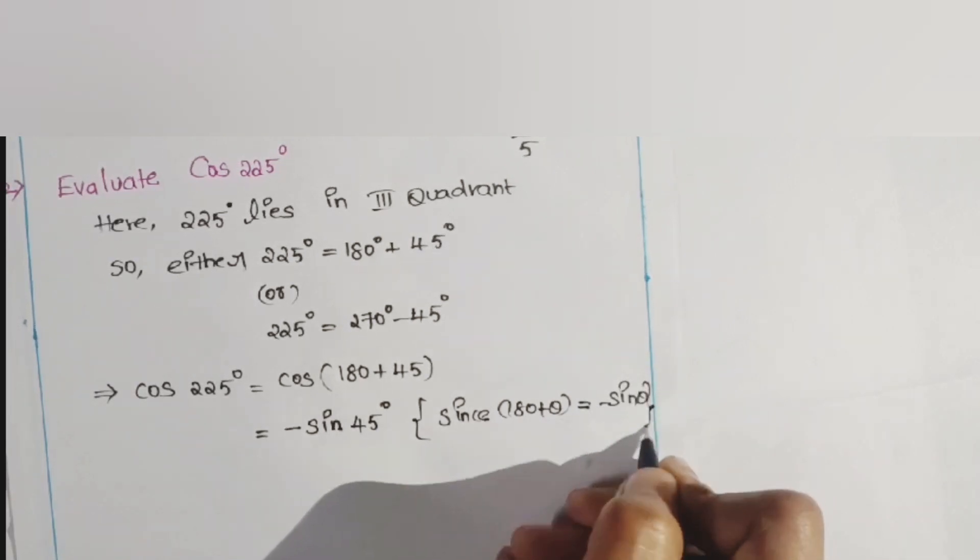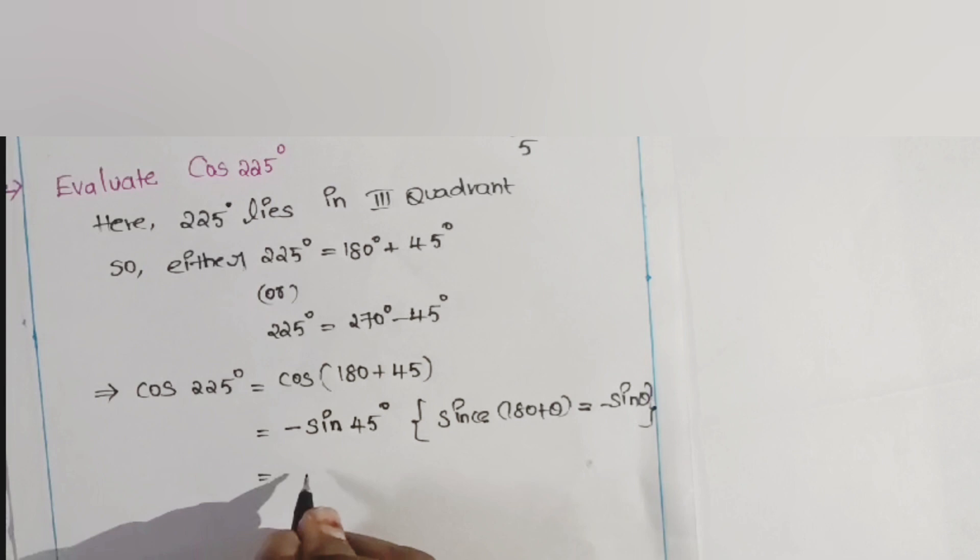That means cos(180° + 45°) is written as minus sin 45°. So minus sin 45° is nothing but minus 1 by root 2.